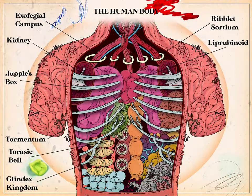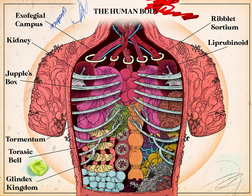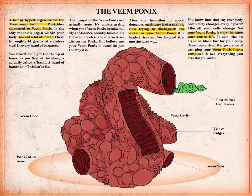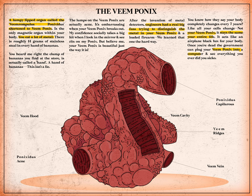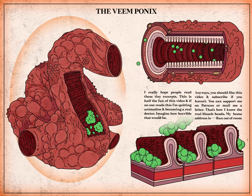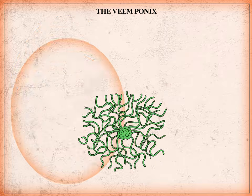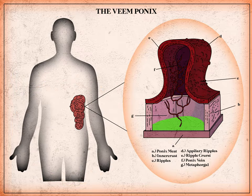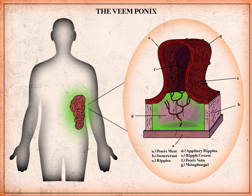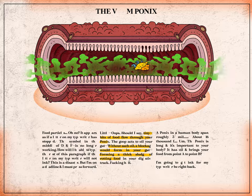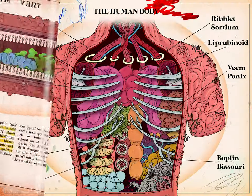In the upper left quadrant we find the veemponix, a magnetic hose that sifts grit and grime away from your tormentum. The veemponix is made of a thin rhetorical acid, which is why it's called the metaphorgan. The metaphorgan creates a fluid ounce of thickened condensed mucal jelly every hour, offering safe harbor for your food as it travels to the boplin.